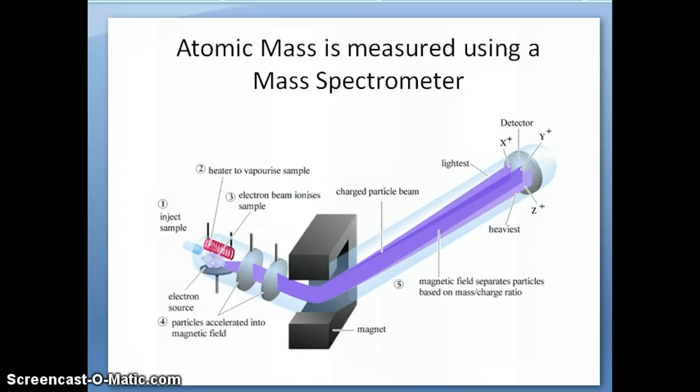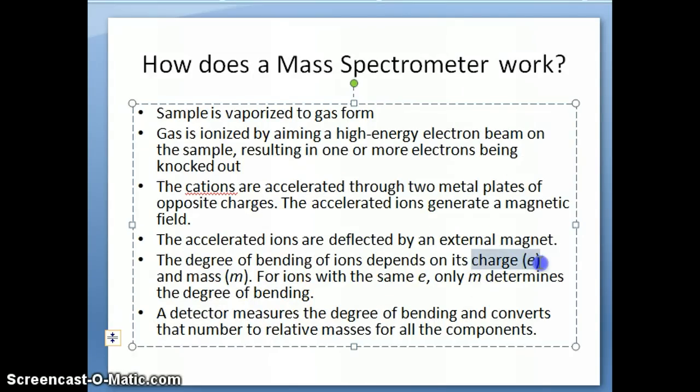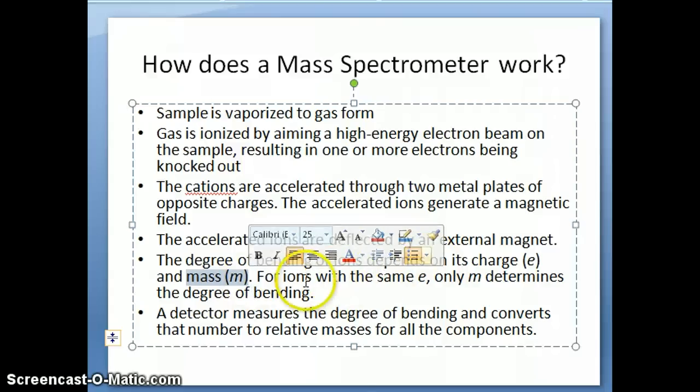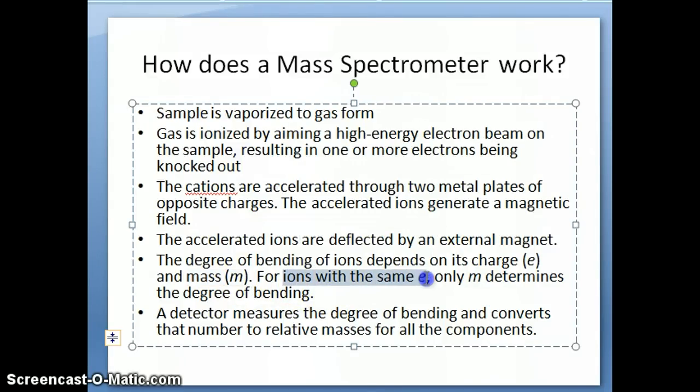I'm going to go to the next slide now to talk about the two factors that are important. One is the charge on the cation itself. The second factor is the mass. You can obviously understand that the heavier the cation is, the harder it is for the magnet to bend its direction of motion, whereas the lighter the ion is, the easier it is for the magnet to bend it. So if we pick ions with the same charge, basically the only thing that's going to affect the degree of bending is the mass.